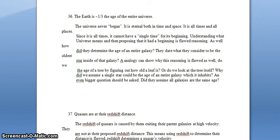As well, how did they determine the age of an entire galaxy? They date what they consider to be the oldest star inside of that galaxy? An analogy can show why this reasoning is flawed as well. Do we figure out the age of a tree by figuring out how old a leaf is? Or do we look at the tree itself? Why did we assume a single star could be the age of an entire galaxy which it inhabits? An even bigger question should be asked. Why did they assume all galaxies are the same age?